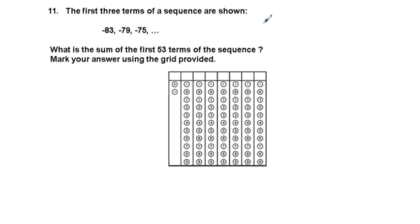The first three terms of a sequence are shown. And if we look at this, we can notice how much do you go from one term to get to the next term? Well, that's going to be d, our common difference, which equals 4.